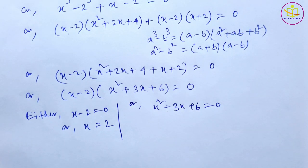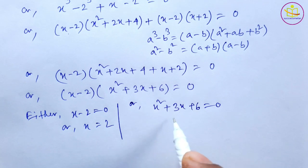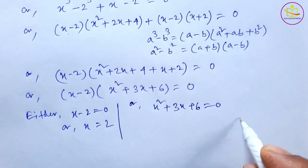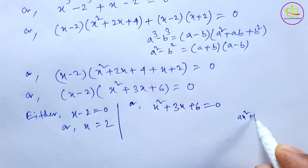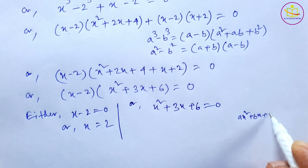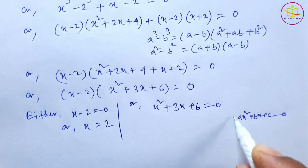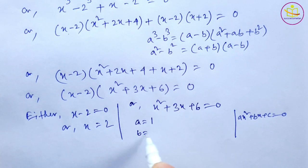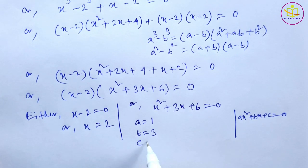We compare x² + 3x + 6 = 0 with the quadratic equation ax² + bx + c = 0. We get a = 1, b = 3, and c = 6.